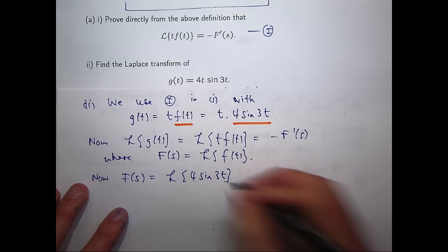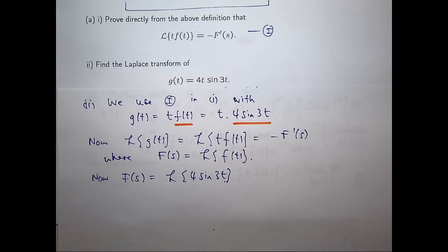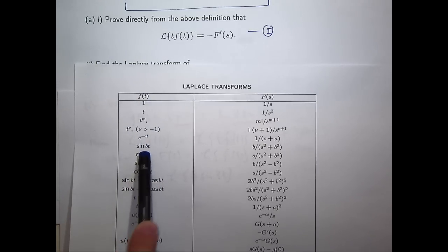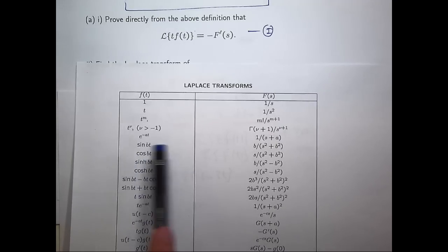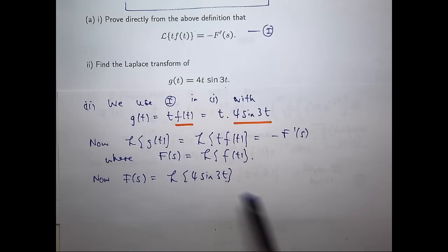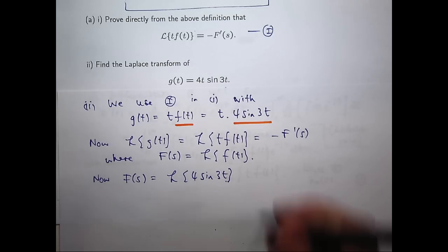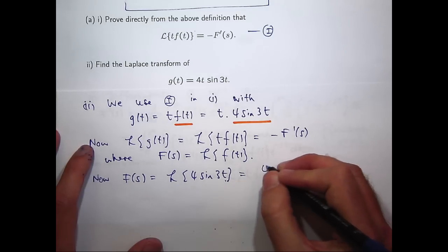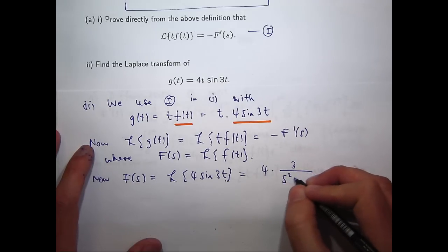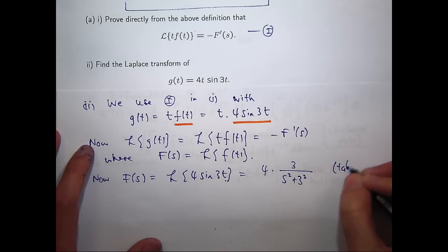What is this Laplace transform? Well, you could work it out directly, but we usually use a table. So, if we look down here, we get to sine bt. Well, we want the Laplace transform of sine 3t. So you would go over here and just replace b with 3. Now, I can bring that 4 out the front if I want to because Laplace transform's a linear operator. So here I've used a table and I'm saying so.